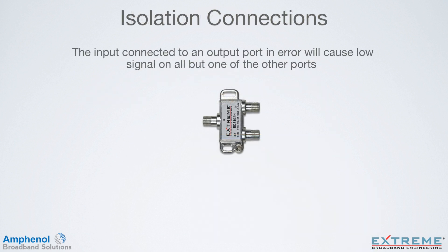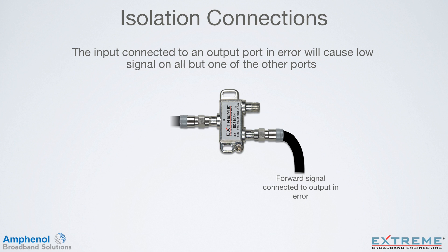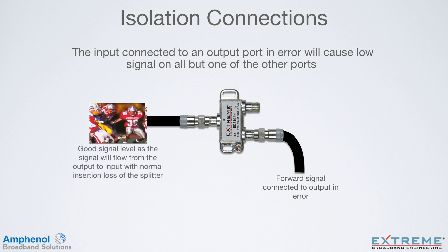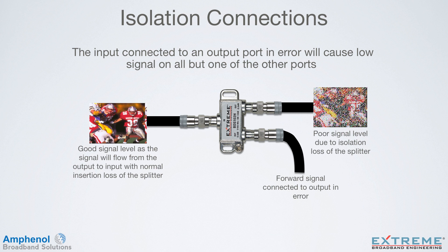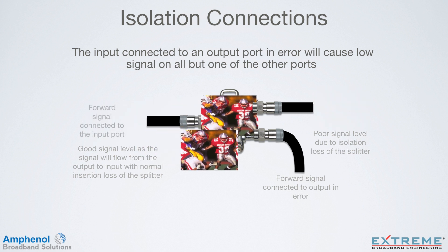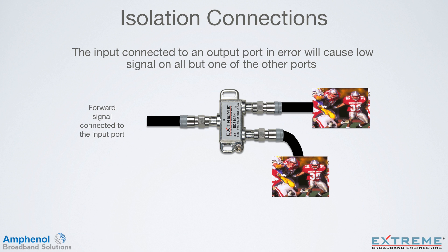A problem you may see in the field is that someone connected the input to an output port in error, and this will cause low signal level on all outputs, while the one connected to the input port is good. In this example, the input is connected to the output port. One outlet has good signal level as it is connected to the input port of the splitter, and the signal will flow from the output to the input with normal insertion loss. The other outlets have poor signal level due to the isolation loss of the splitter. Once the input cable is connected to the input port, all outlets will receive the proper signal.